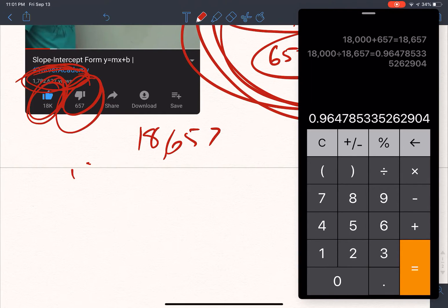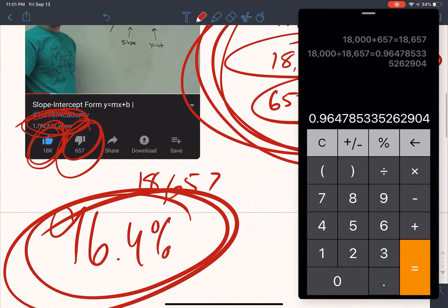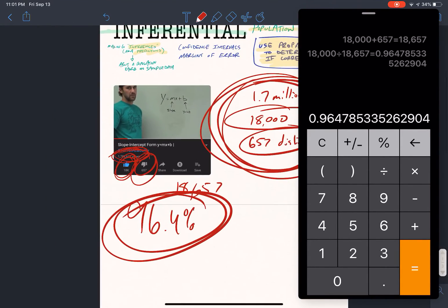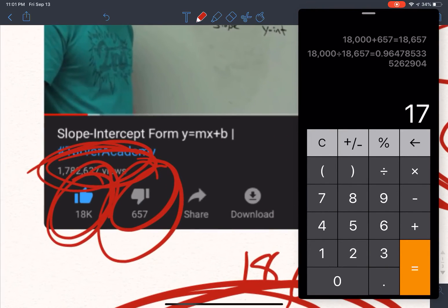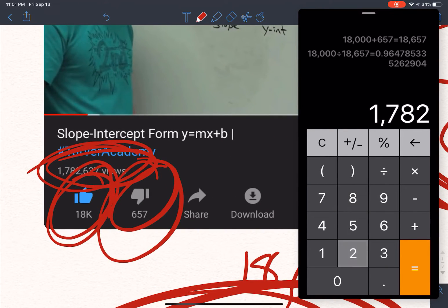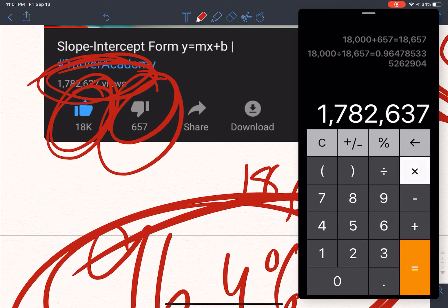this helped 96.4% of the people. So if I'm going to translate that to the larger 1.7 million, I would do 1,782,637, I think. All right. Times 0.964. So I'm turning into a decimal.